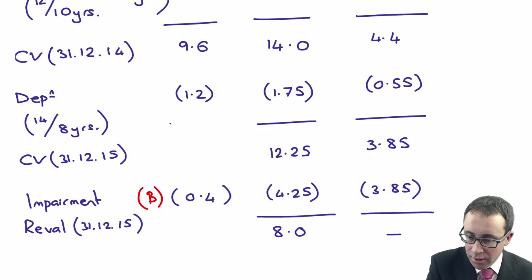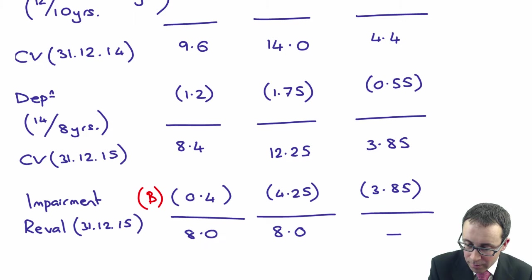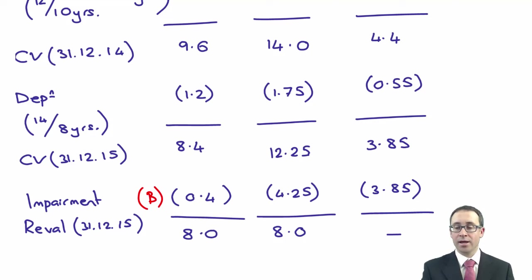If we had not revalued it, the carrying value would have been 8.4. We would need to have impaired it to 8, so we would have had an impairment through profit or loss of 0.4 million. On your statement of financial position, you're going to have 8 as the value of the asset, the impaired value.